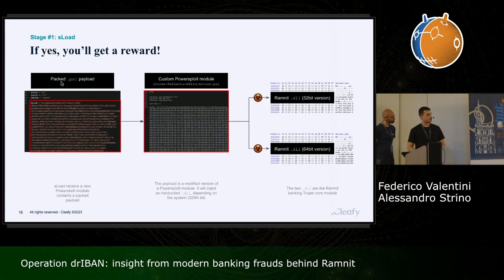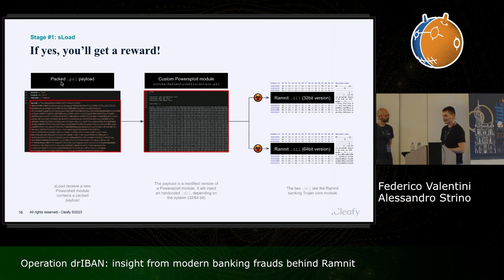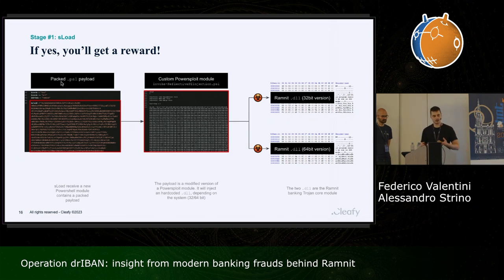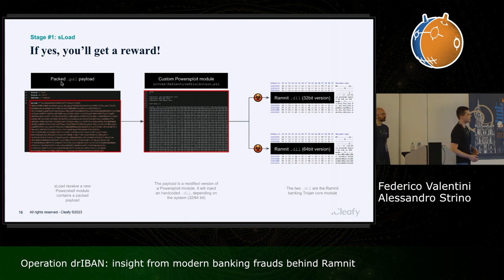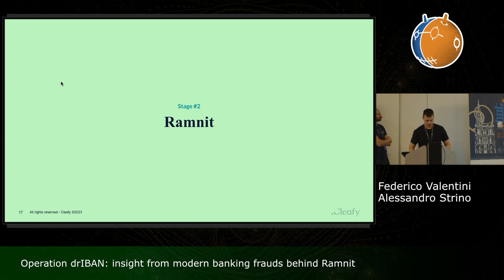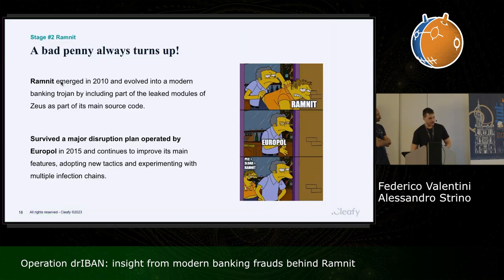If you are one of those targeted victims, you will see the actual final payload: a packed PowerShell payload. If you unpack it, you find a custom version of an open-source project called PowerSploit. The threat actor modified a module of this project for reflectively injecting a DLL into a remote process — the DLL was embedded into the payload itself. Both a 32-bit and 64-bit version of the Ramnit core banking trojan are included.